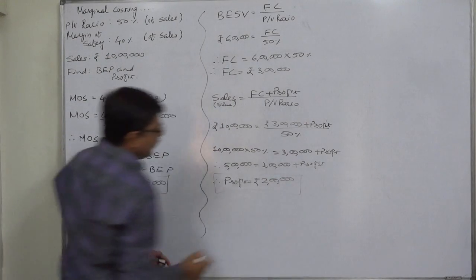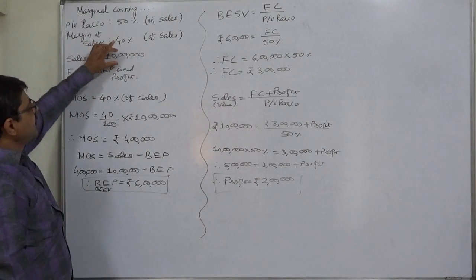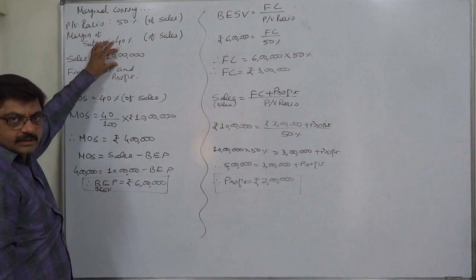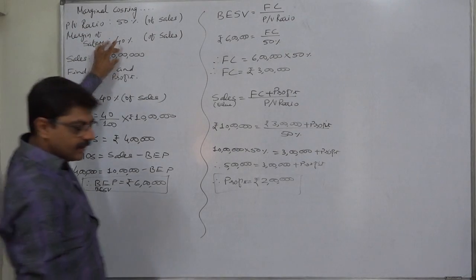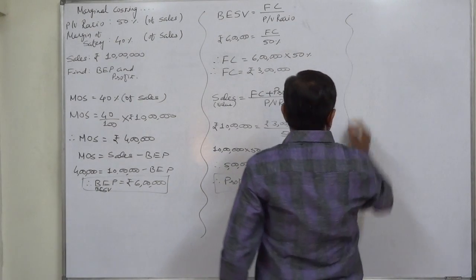If we solve this, profit comes to rupees 2 lakh or 200,000. At present, the firm is making a profit of rupees 2 lakh or 200,000 by selling worth rupees 10 lakh or 1 million. Now, another way of calculating profit is very short and sweet.